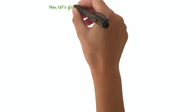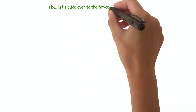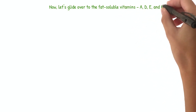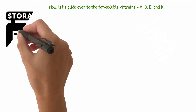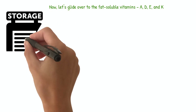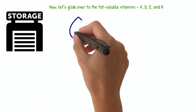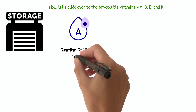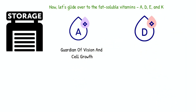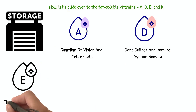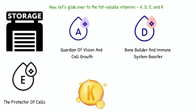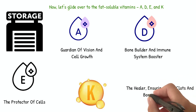Now let's glide over to the fat-soluble vitamins: A, D, E, and K. Think of them as the body's reserve forces, stored and ready to be deployed when needed. Vitamin A — the guardian of vision and cell growth. Vitamin D — the bone builder and immune system booster. Vitamin E — the protector of cells. And vitamin K — the healer, ensuring blood clots and bones stay healthy.